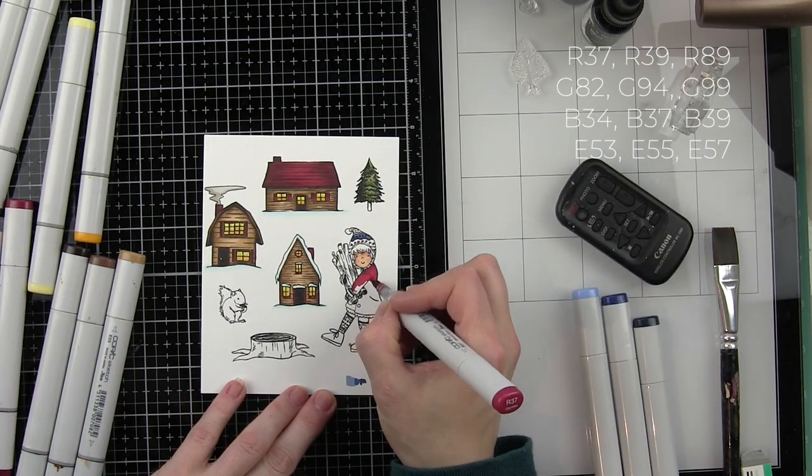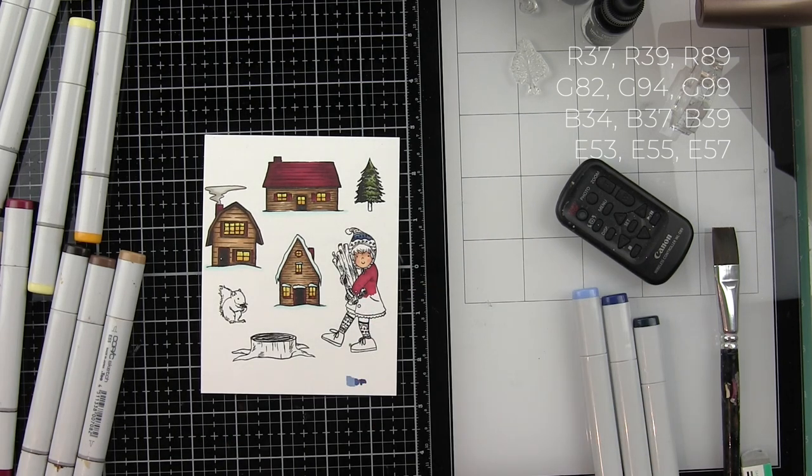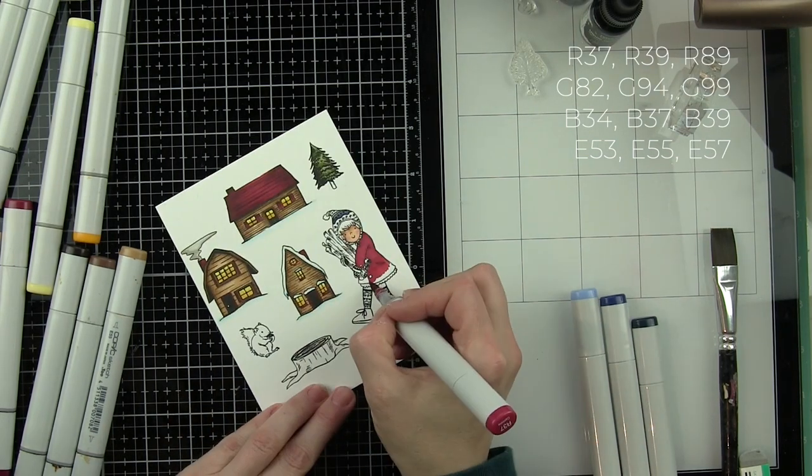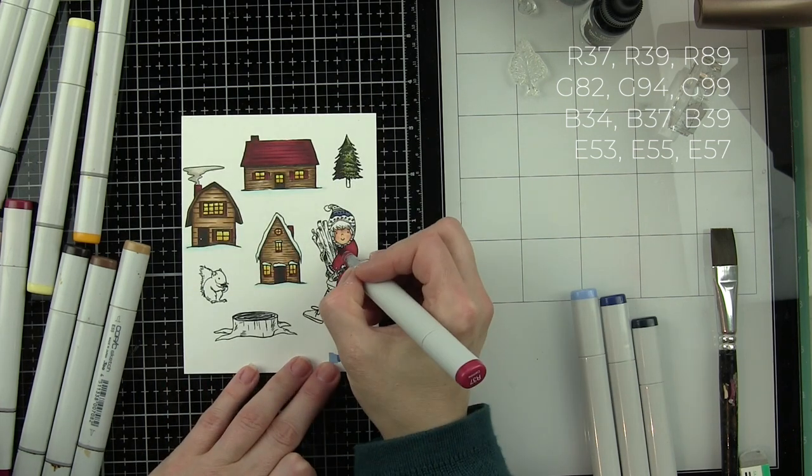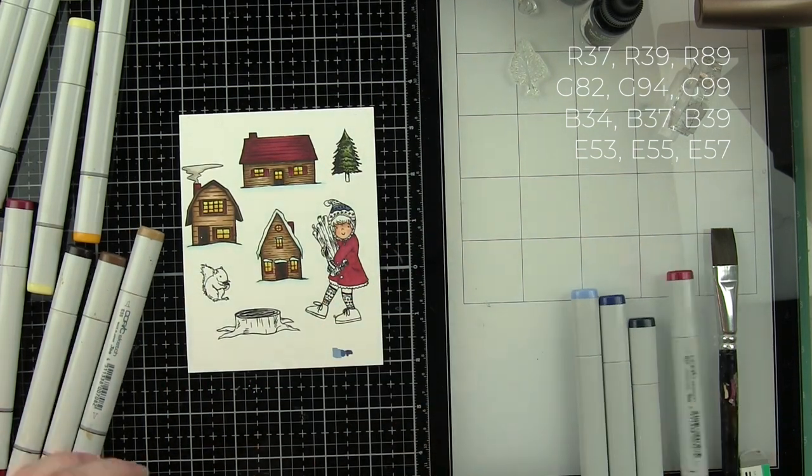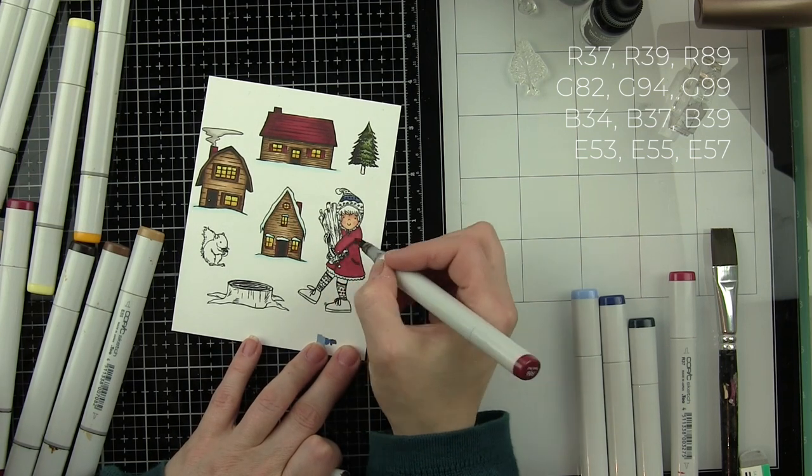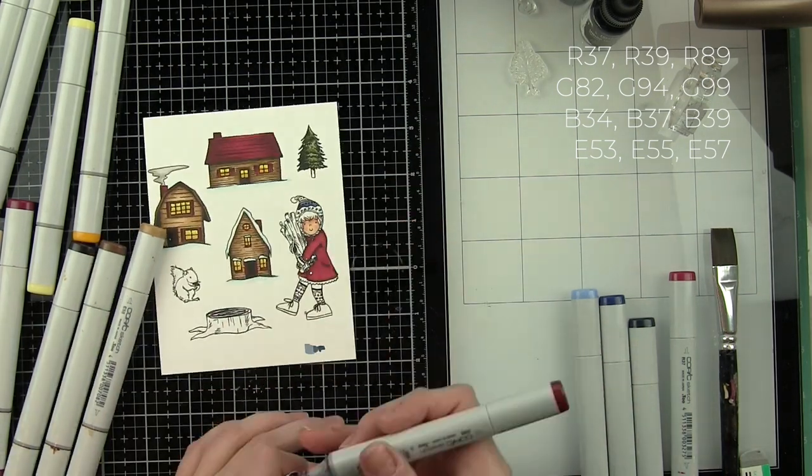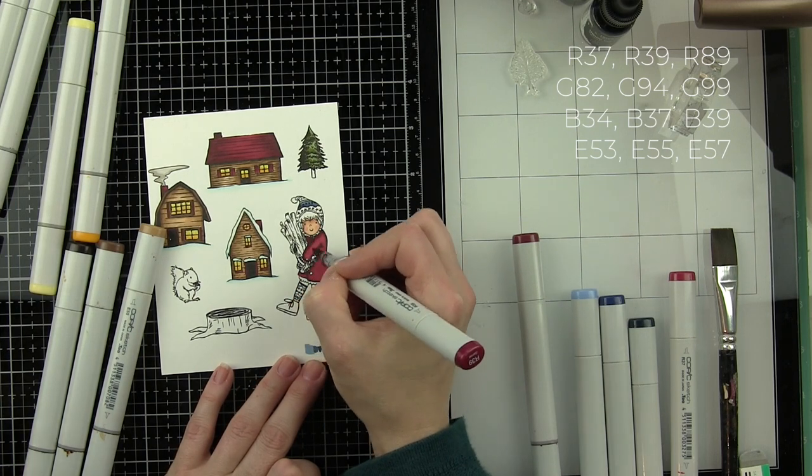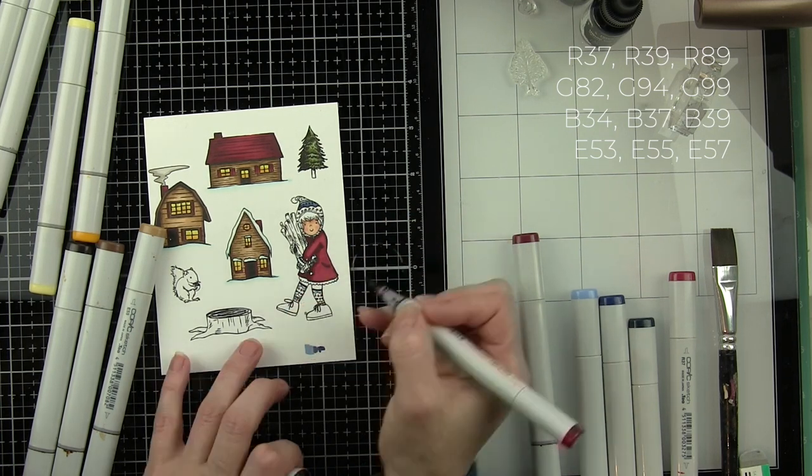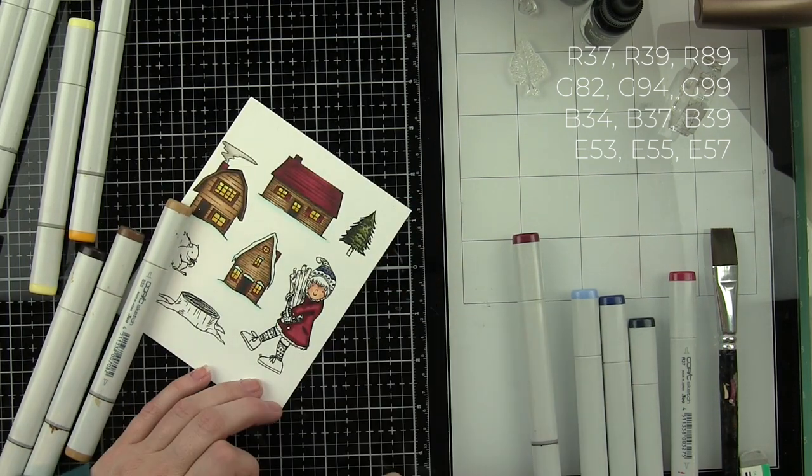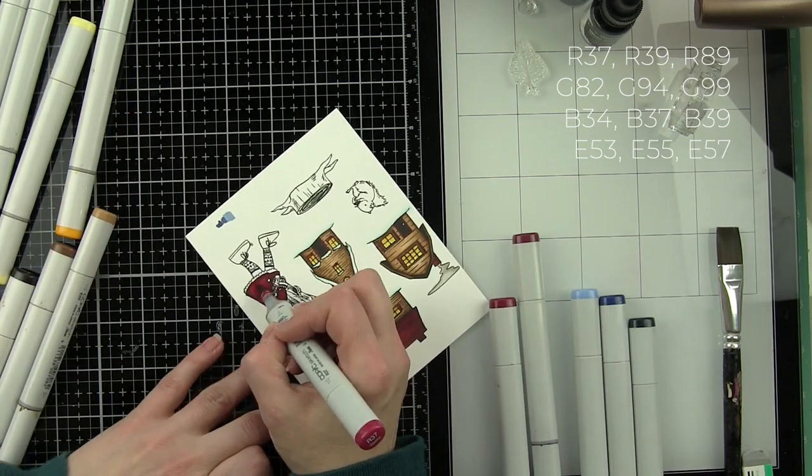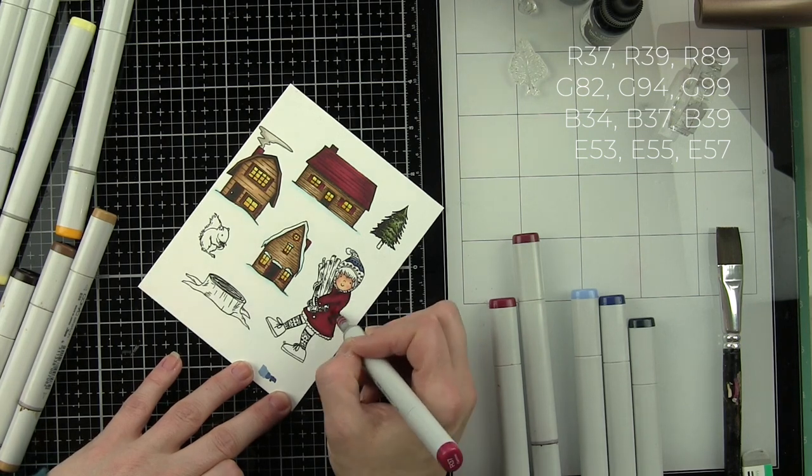The majority of the girl's outfit here is going to be red, and that's providing that nice pop of color to kind of offset all of the neutrals in the background of our card. So her coat's going to be red and her hat and socks and gloves are all going to be a combination of a blue color combination, green color combination, and then red. The reds are R37, 39, and 89. The greens again are G82, 94, and 99, the same colors I used for the trees, and the blues are B34, 37, and 39. All of these color combinations are more along the deeper, richer jewel tones rather than bright primary. I love these for holiday colors.